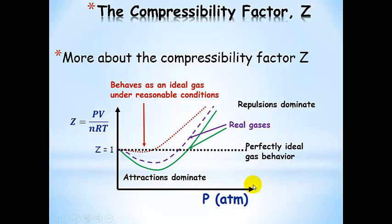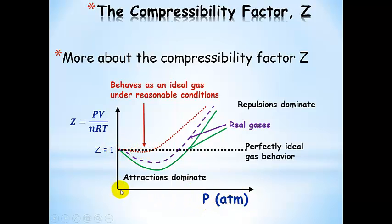Here's the graphical view using the compressibility factor Z vs. pressure in atmospheres. When Z is equal to 1, that's perfectly ideal gas behavior. We have three gases in our system. The first one, under conditions of relatively low pressure, behaves basically ideally — we would call this an ideal gas.